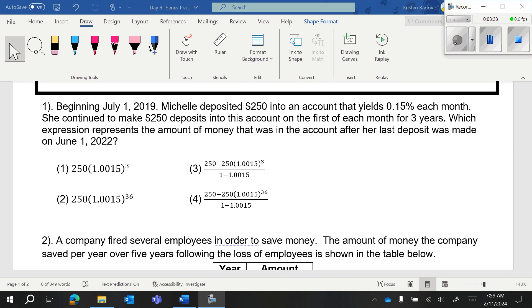So the first thing that you should notice is that yes, you're given 3 years, but they're talking about the percentage being each month. So 3 years is 36 months. And that means we should automatically cross out 1 and 3.